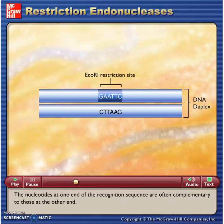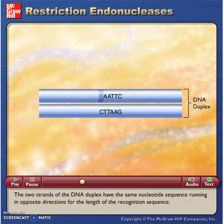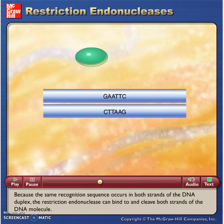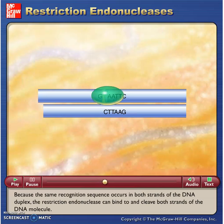The nucleotides at one end of the recognition sequence are often complementary to those at the other end. The two strands of the DNA duplex have the same nucleotide sequence running in opposite directions for the length of the recognition sequence. Because the same recognition sequence occurs in both strands of the DNA duplex, the restriction endonuclease can bind to and cleave both strands of the DNA molecule.